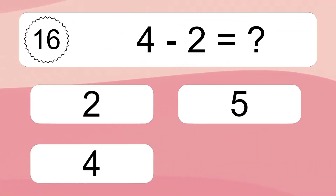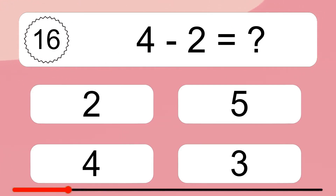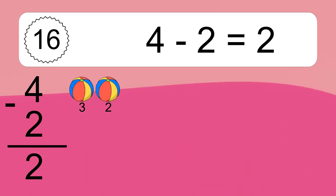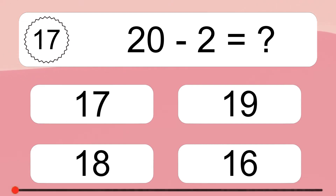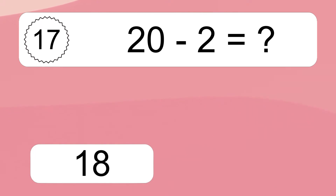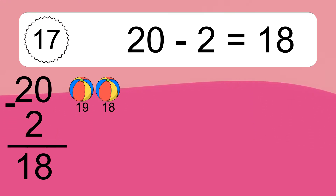4 minus 2 equals what? 4 minus 2 equals 2. Let's count it: 3, 2. 20 minus 2 equals what? 20 minus 2 equals 18. Let's count it: 19, 18.